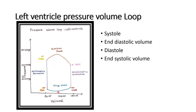Diastole consists of isovolumetric relaxation and the filling phase; systole consists of isovolumetric contraction and the ejection phase. During the filling phase, volume increases while pressure remains largely unchanged.